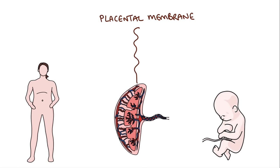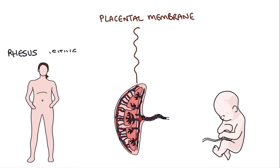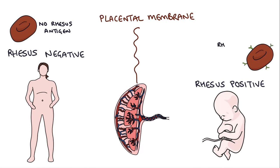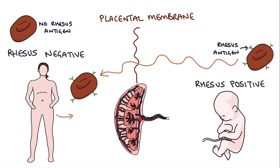So why is this important in pregnancy? If the mum is rhesus positive we have nothing to worry about, because the baby can be rhesus negative or positive and she's never going to attack the baby's blood cells. But if the mum is rhesus negative and the baby is rhesus positive, any time the baby's blood gets into the mother's bloodstream she's going to create anti-rhesus antibodies.